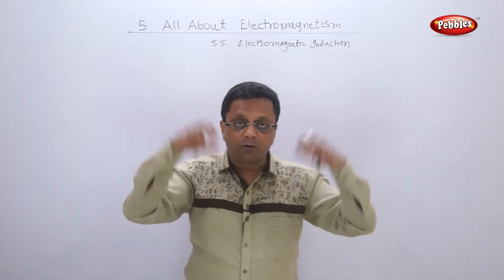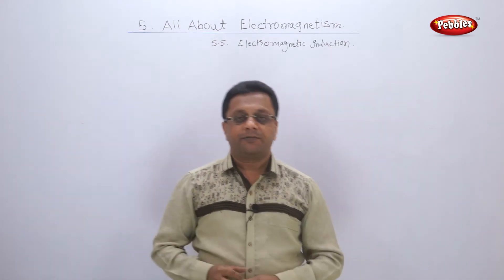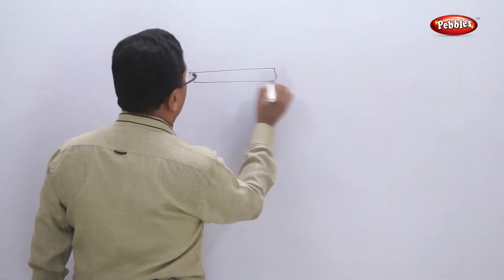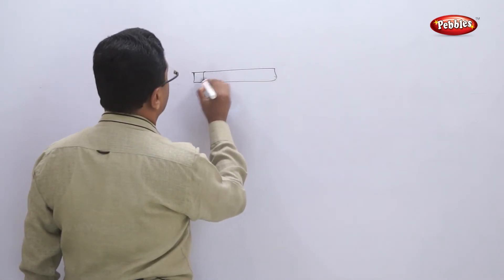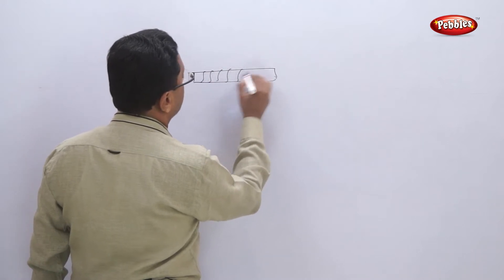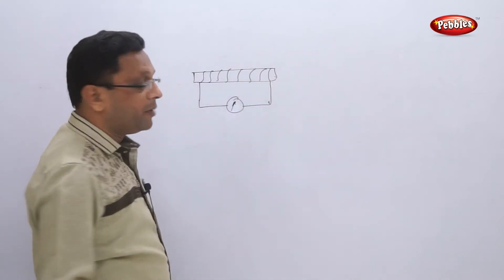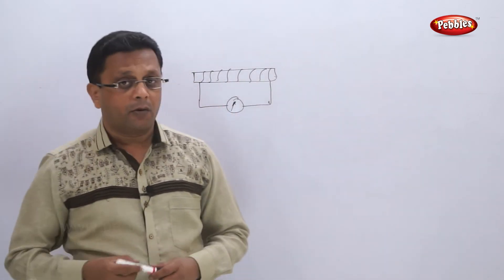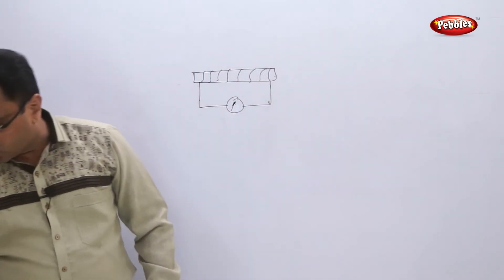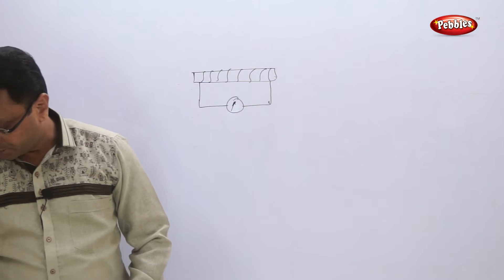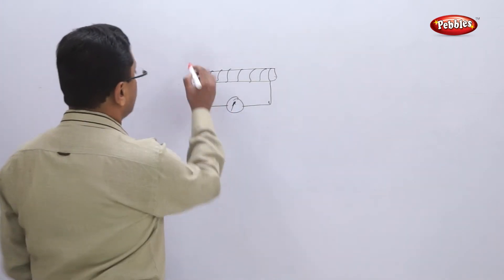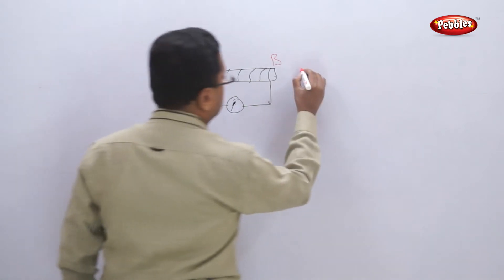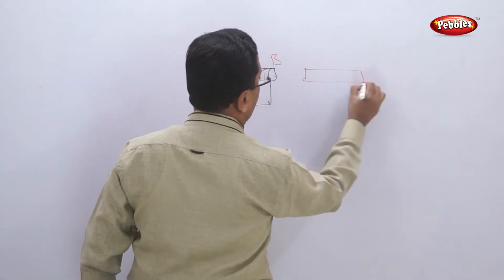So let us see what electromagnetic induction is. 'Induction' means inducing something into something. We have one coil with a meter attached to it, and I am taking a strong magnet — this is side A and this is side B.